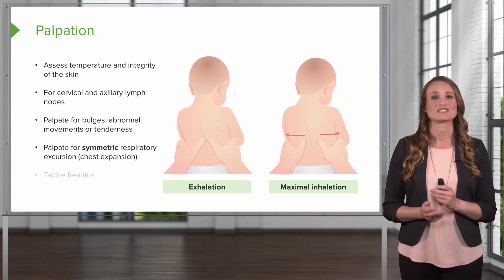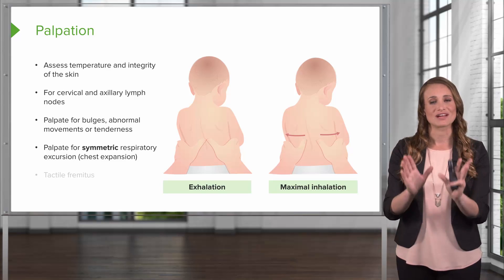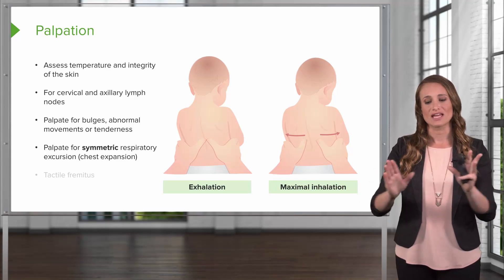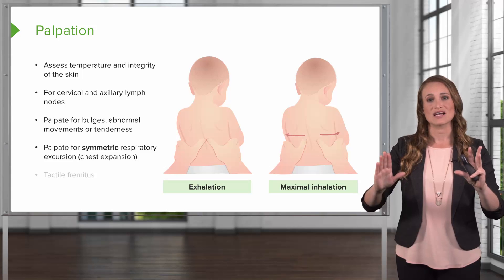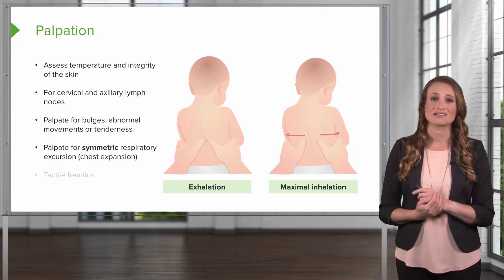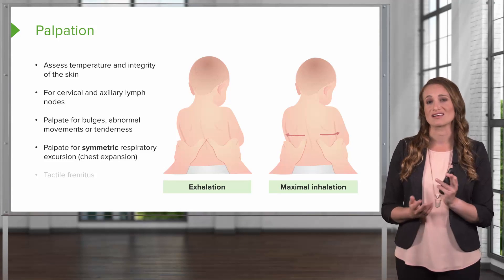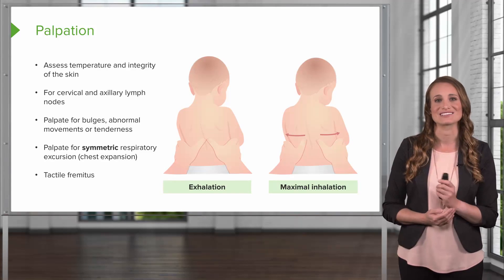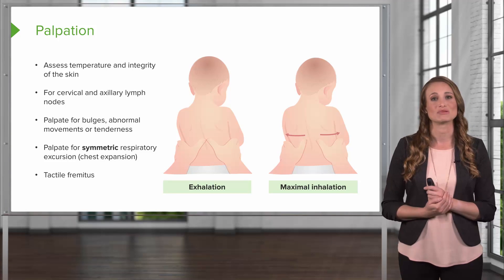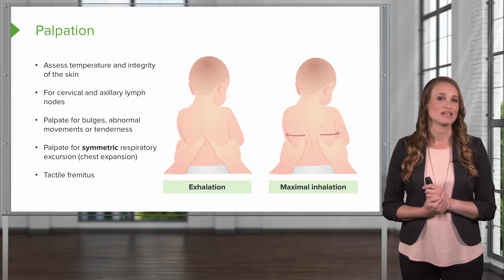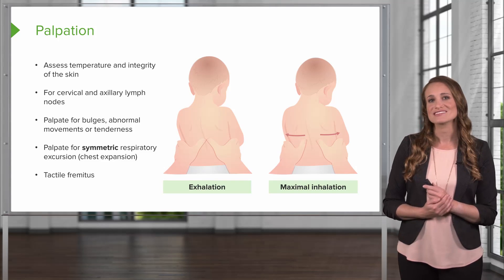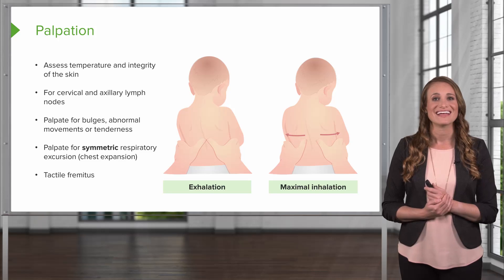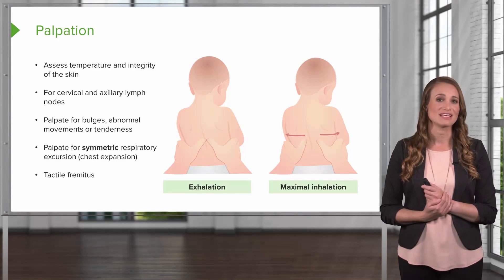Next, you're going to check for symmetric respiratory excursion or chest expansion. The provider puts their hands along the patient's spine and has the patient take a big, deep breath. When maximally inhaled, the hands will spread apart evenly. When the patient breathes out, the hands should come back together symmetrically. If they don't come back symmetrically, the patient may have a condition like a collapsed lung (pneumothorax) or consolidation/pneumonia. Next, the clinician will perform tactile fremitus — assessing the density of structures below the skin by feeling for vibrations as the patient says '99.' An increase indicates denser or inflamed tissue, such as in pneumonia. A decrease suggests air or fluid in the pleural space, which can be caused by conditions like asthma.